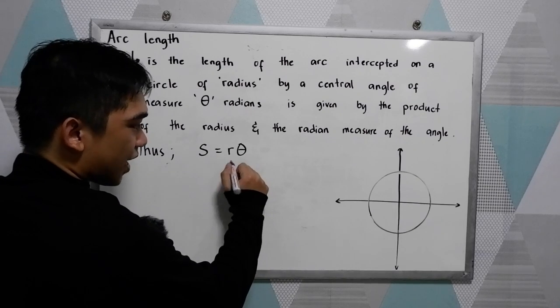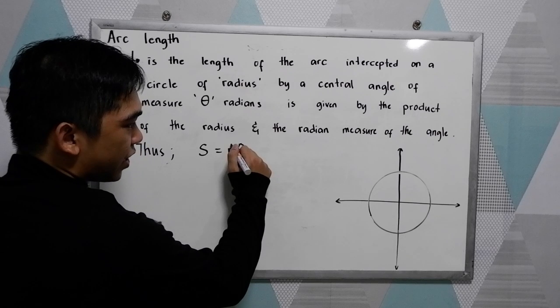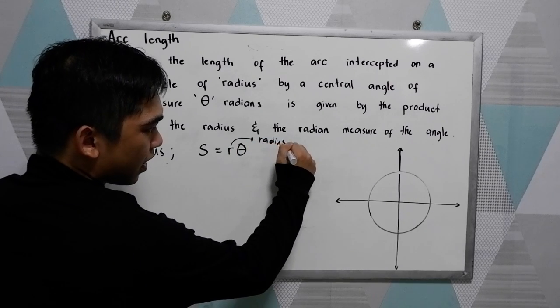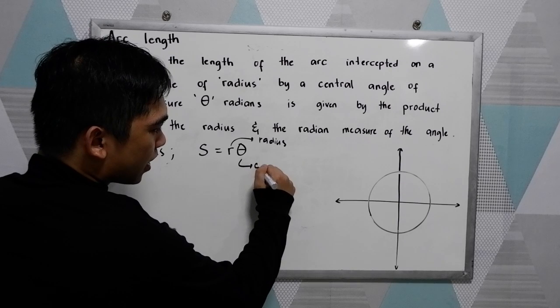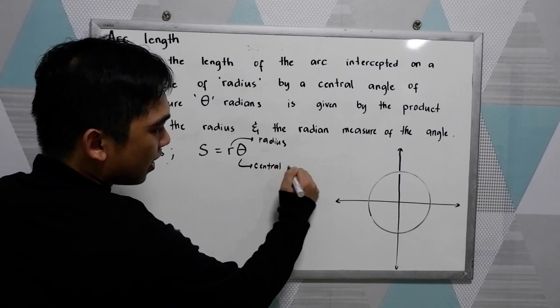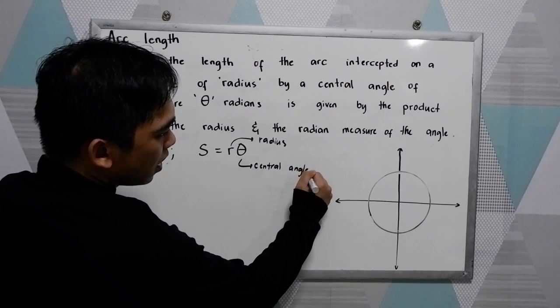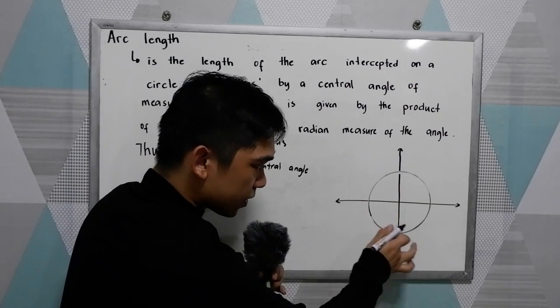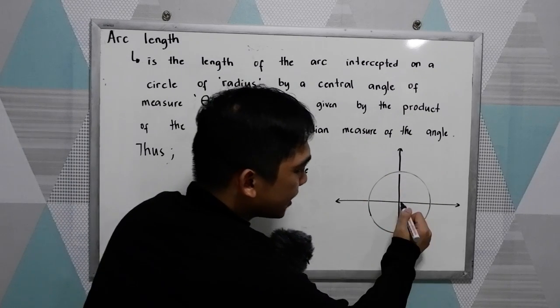So this is the arc length. R is for radius, stands for radius, and theta is our central angle. So to illustrate, let's say we have this circle and we have here...